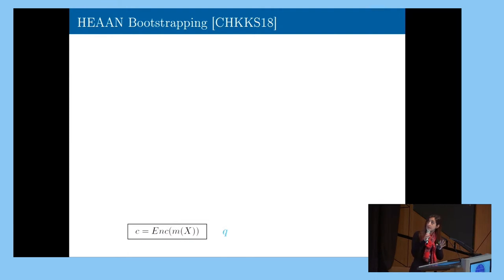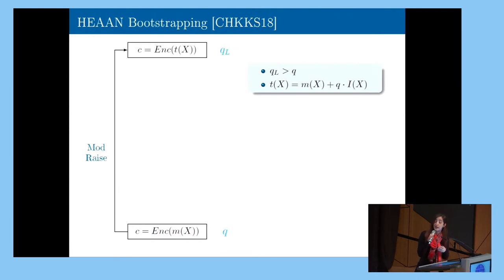So just to summarize the bootstrapping steps, we start from a low-level ciphertext encrypting the message m. As I say, we will go up to a larger level that I will call Q_L from now on.